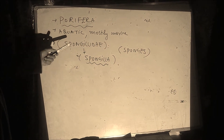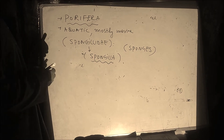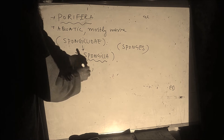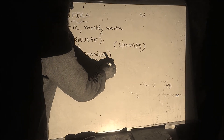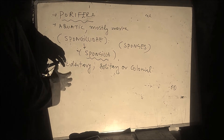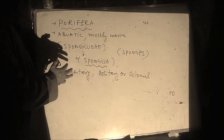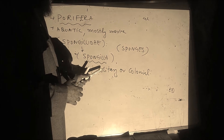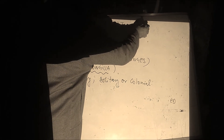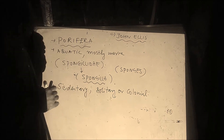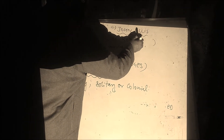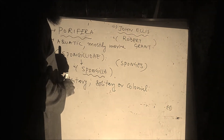This group of animals is actually sedentary — they are solitary or colonial. These animals remain fixed to the ground and attached to their substrate. Their animal nature was recognized by a scientist named John Ellis, and the term Porifera was coined by Robert Grant.